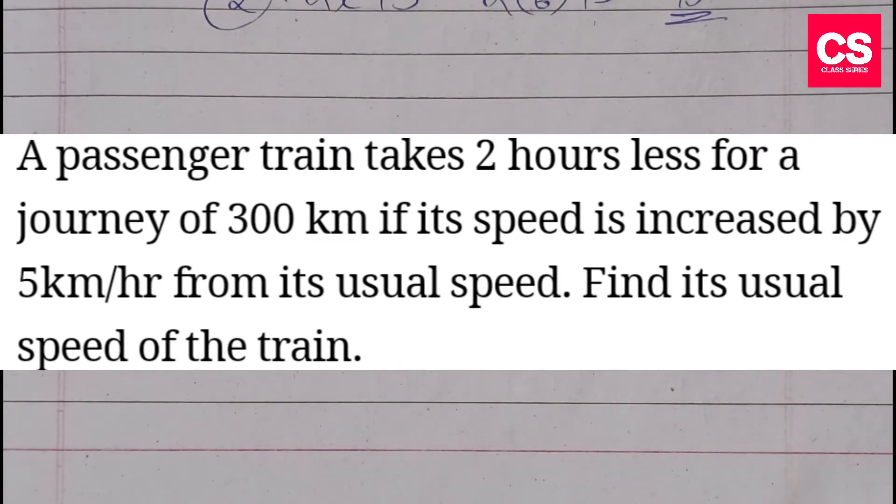Hello everyone, welcome to class series and in this video, we are going to solve the question. A train takes 2 hours less for a journey of 300 km if its speed is increased by 5 km per hour from its usual speed.